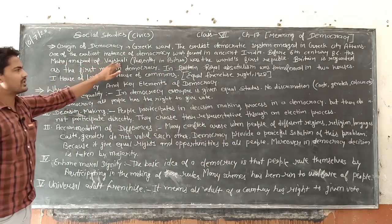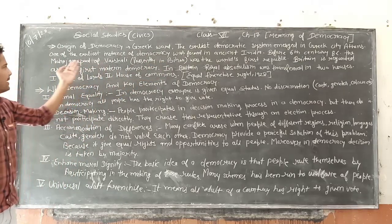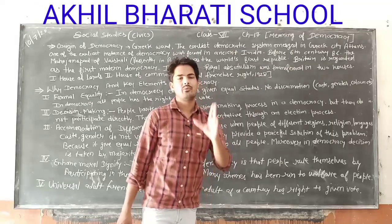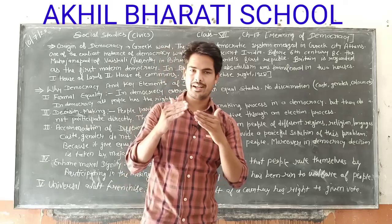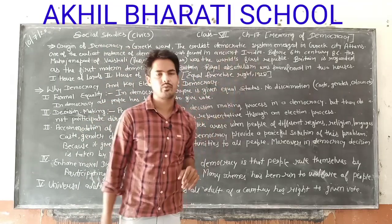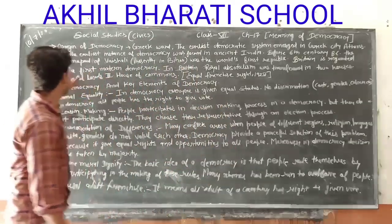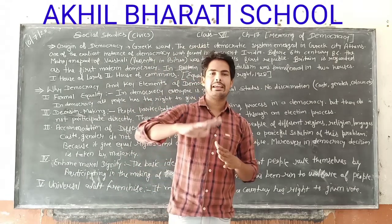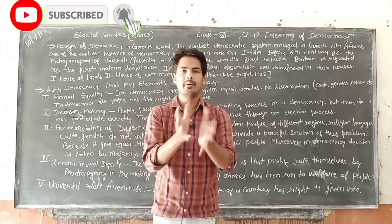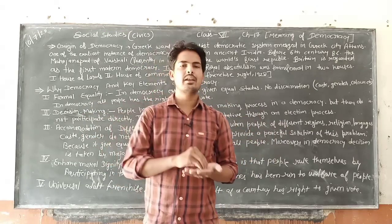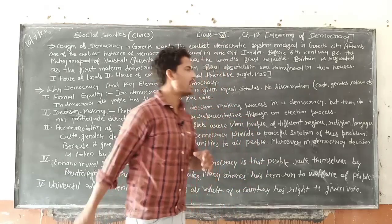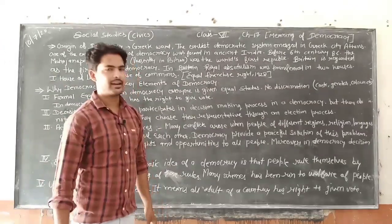The Mahajanapada of Vaishali, presently in Bihar, was the world's first republic. In 6th century BC in Northern India, many large independent kingdoms emerged that were called Mahajanapadas. Vaishali was one of them and it has been given the title of the world's first republic.